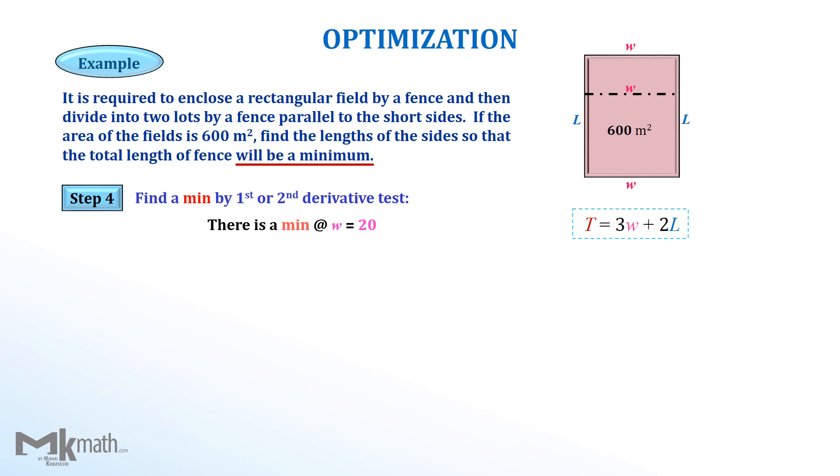We found the width 20 meter, which makes the total length minimum. Next, we need to find the length as well. We have the area equation in step 2 to find the length. Substituting W equal to 20 into the equation to get the length as 30 meter.